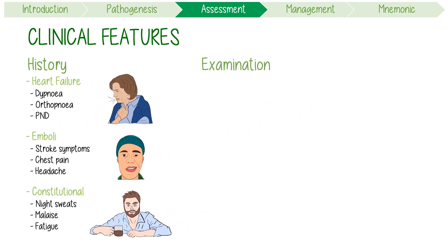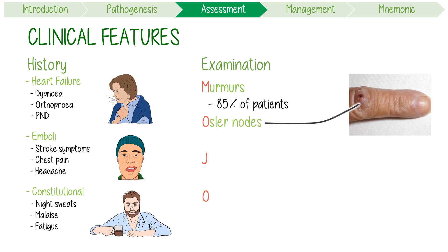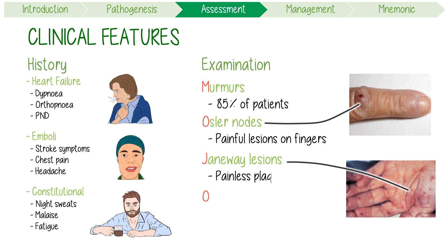On examination, you should specifically look for your patient's MOJO. Murmurs, which are found in up to 80% of patients. Osler's nodes, or the 'ouchy nodes,' because they're the painful lesions found on the fingers. Janeway lesions, which are painless plaques on the palms. And finally, odd splinters in the nails, referring to splinter hemorrhages.